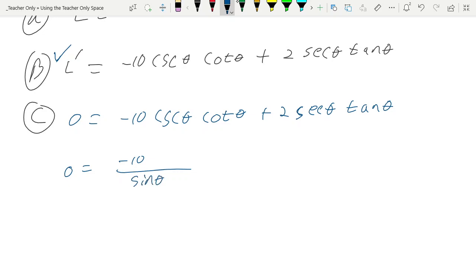So cosecant is the same thing as 1 over sine. Cotangent, right? This would be like times cotangent. So cotangent is the same thing as cosine over sine. So the cosine will be in the numerator and the sine would be in the denominator. But sine times sine is just sine squared. Plus two. Now over here, once again, secant is the same thing as 1 over cosine theta. And tangent is sine theta over cosine theta. Similar logic. Cosine times cosine is cosine squared. And now, at least now we have some trig functions that are in common, that have some similarities.